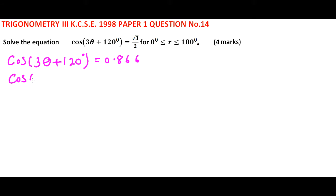This means cos(3θ + 120°) equals cos 30°, implying that 3θ + 120° = 30°.